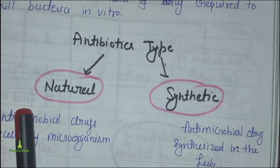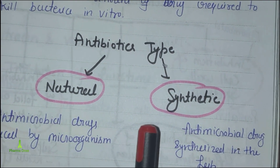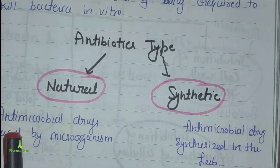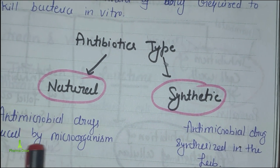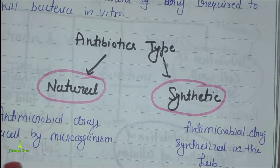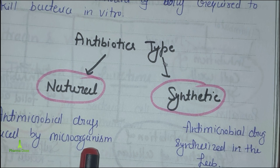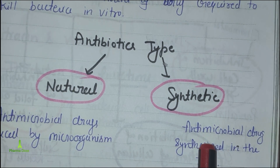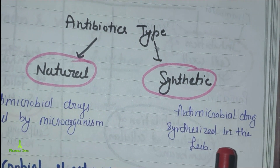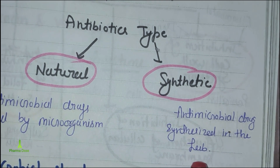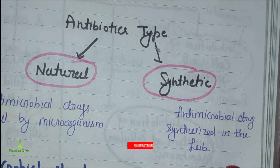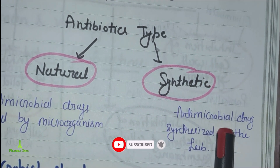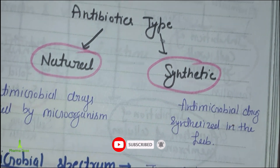Antibiotics are further divided into two types: natural and synthetic. Natural antimicrobial drugs are produced by microorganisms, while synthetic antimicrobial drugs are synthesized in the laboratory.